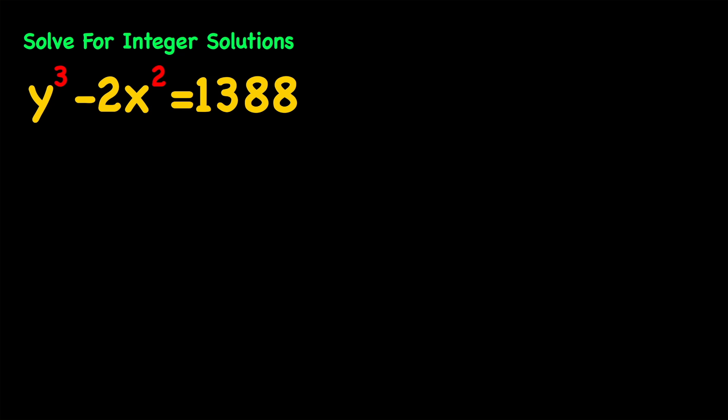Hey there folks! In this video we're going to take a look at another math Olympiad problem in which we want to solve a Diophantine equation. We're given that y cubed minus 2x squared equals 1388 and we want to solve for integer solutions.